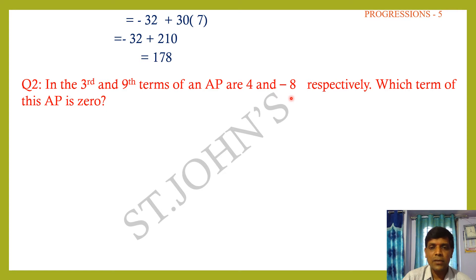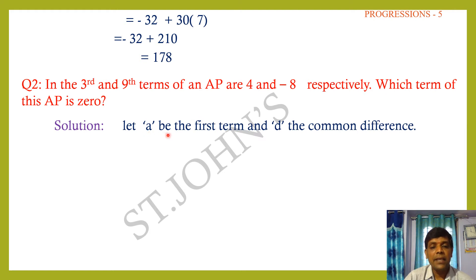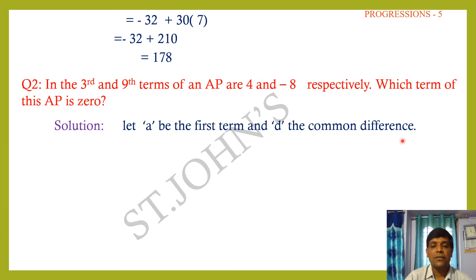We don't know n, so let the nth term be 0. Solution: Let a (or a₁) be the first term and d the common difference.